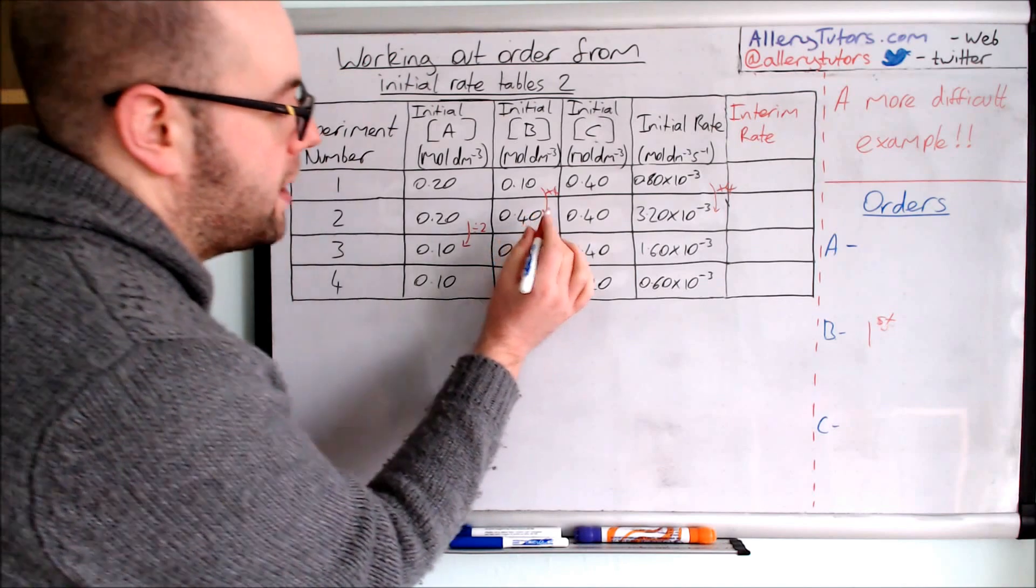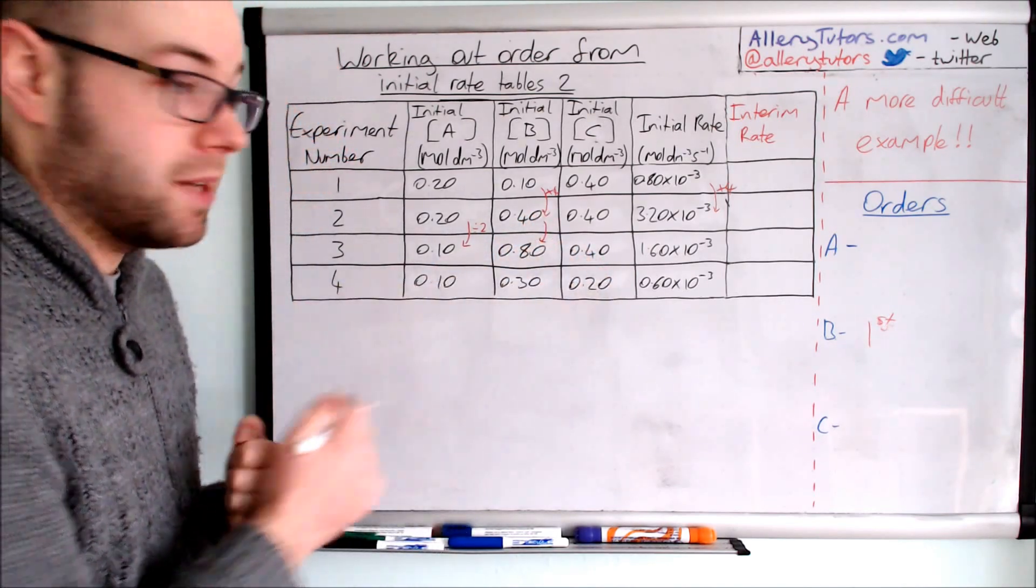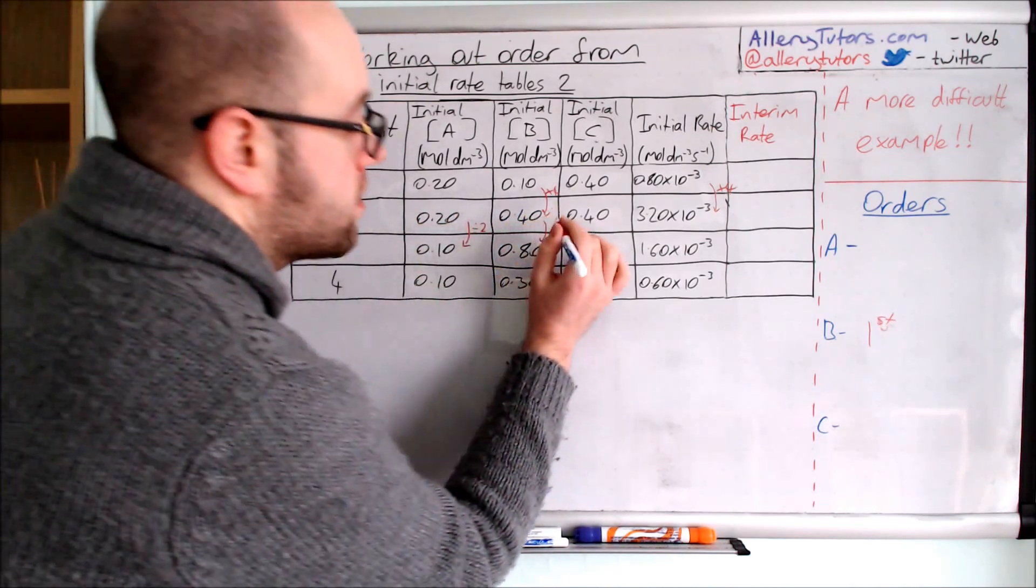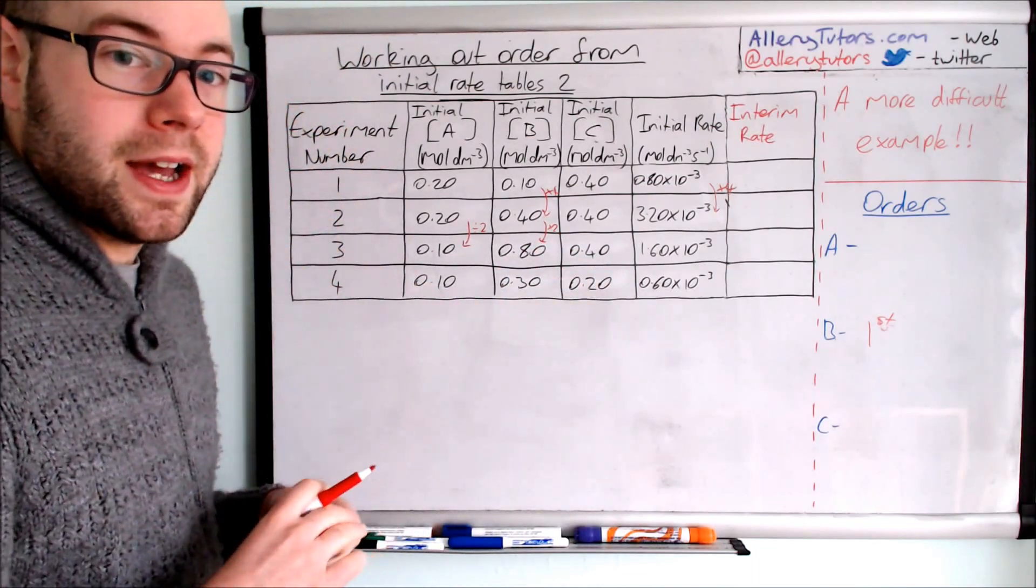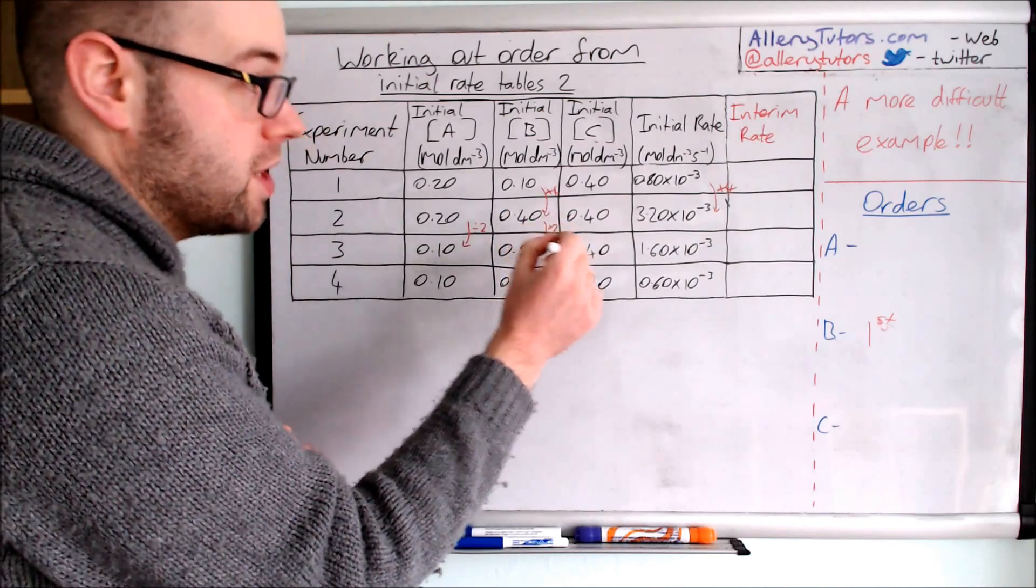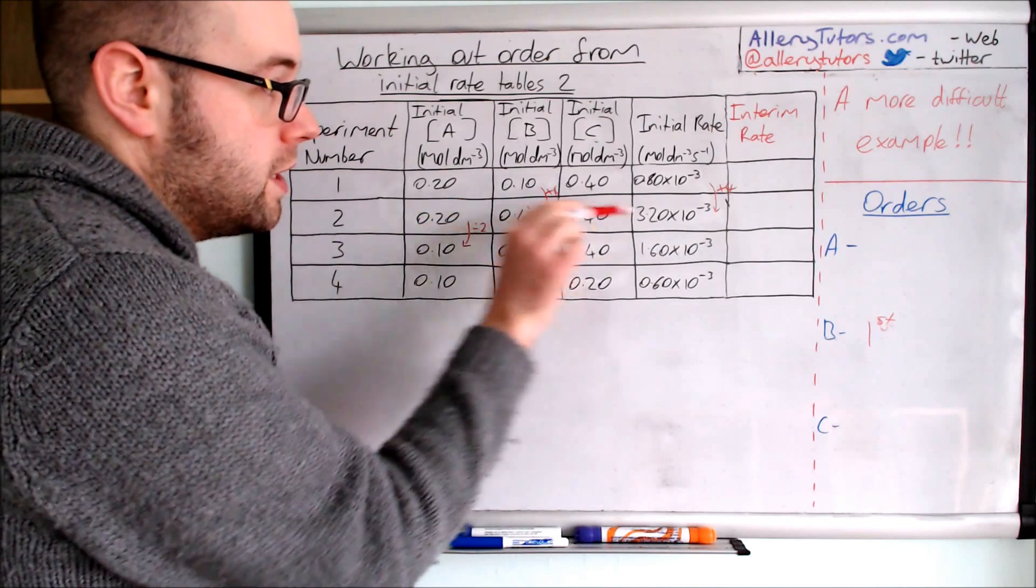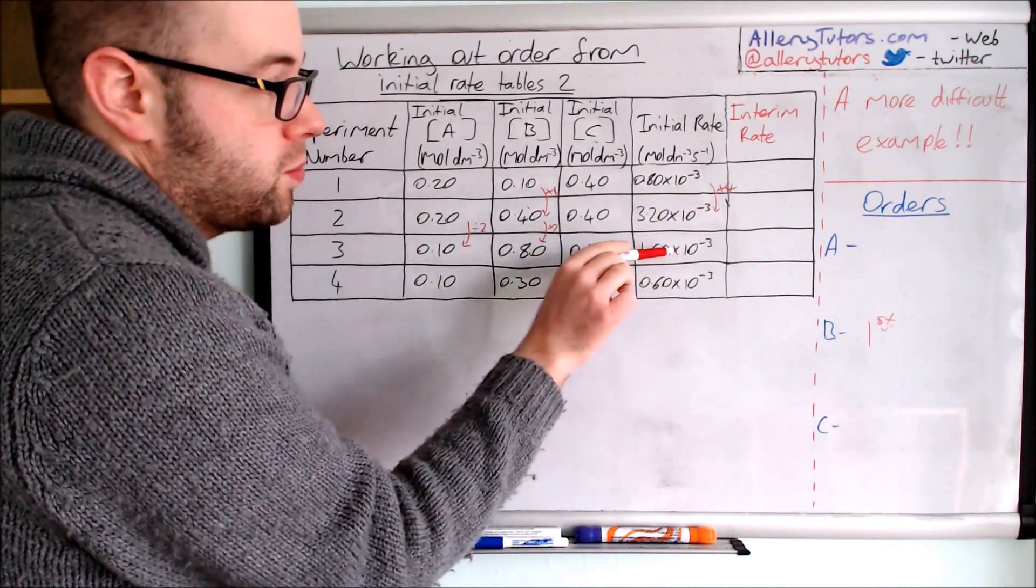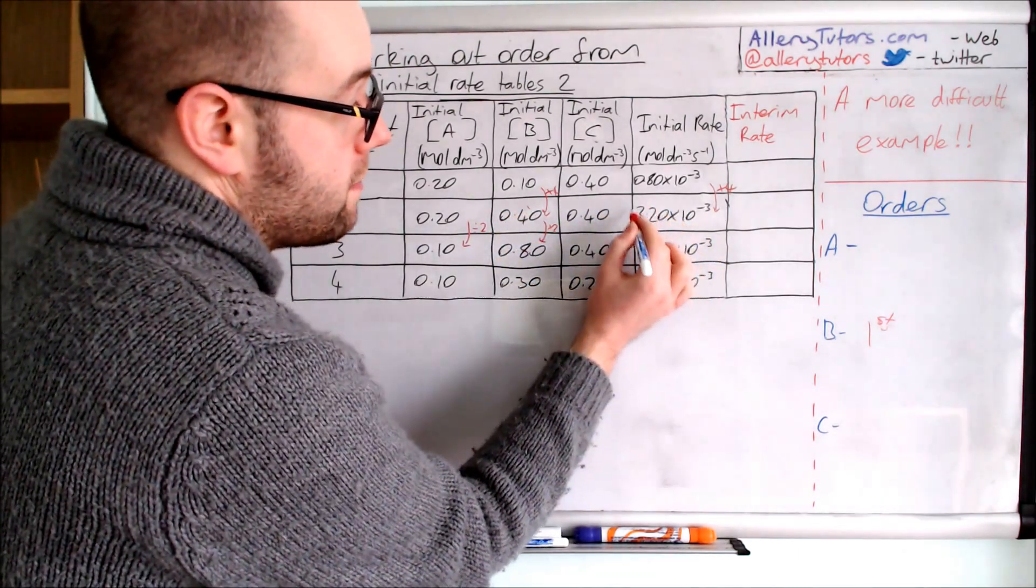We're going to start by looking at B. B is doubling, we're going from 0.4 to 0.8 within the same two experiments, so we're going to put times by 2 there. We know that B is first order, so any effects on rate because of B changing would be double. If we start from here, 0.4, we're saying it's been doubled here. So 3.20 times by 10 to the minus 3 going to 1.6.